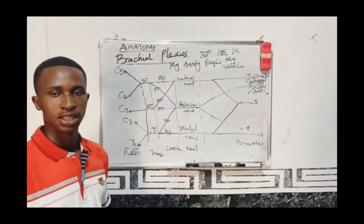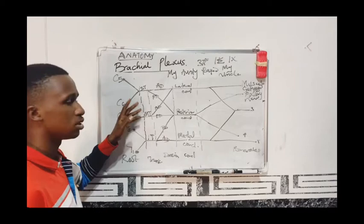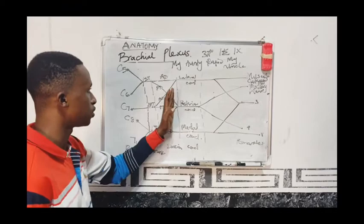The terminal branches are the branches that arise at the ending aspect of the brachial plexus. The side branches arise from either the roots, the trunk, or the cords — from the parts of the brachial plexus.